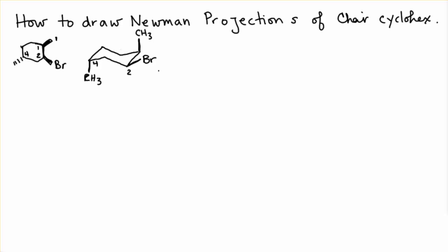So I'm going to look down. So here's my little Newman eye, looking down the C2, C1 and the C4, C5 axes. So looking down the C2, C1 axes, we know we're going to have a carbon in the back and a carbon in the front.